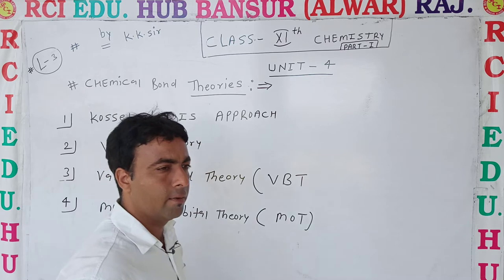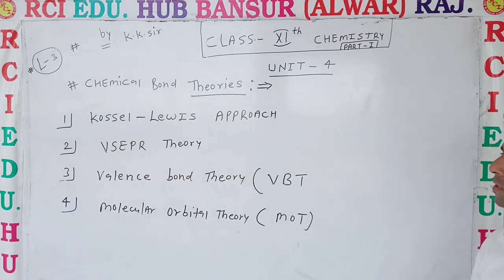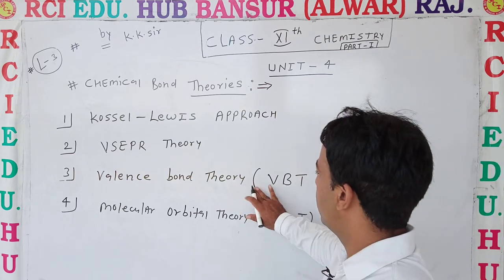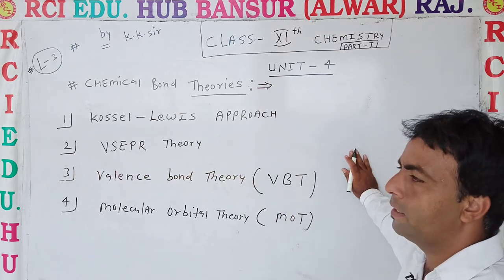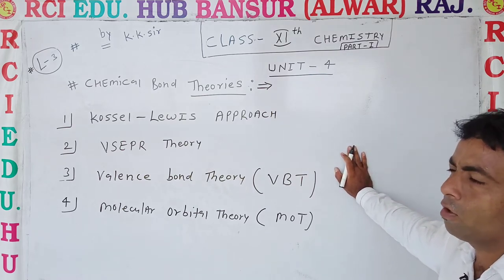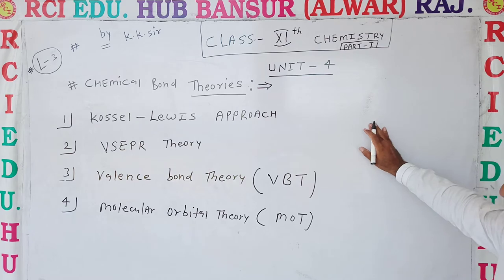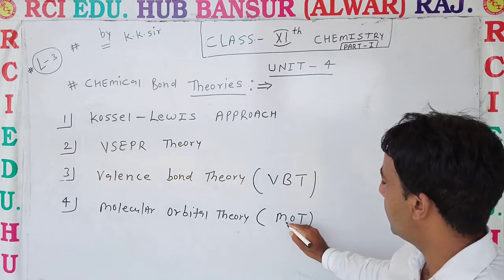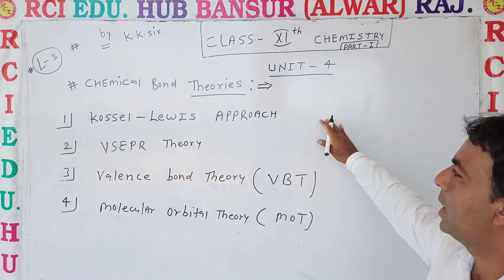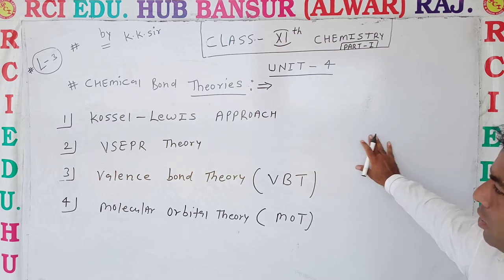The 4 theories to explain chemical bond are: first, Kossel-Lewis approach; second, VSEPR theory; third, Valence Bond Theory called VBT; and last, Molecular Orbital Theory referred to as MOT. Today we will study these theories one by one.